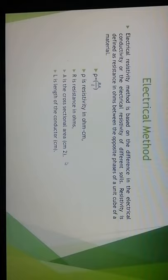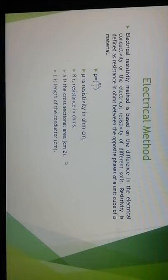The electrical resistivity method is based on the difference in the electrical conductivity or electrical resistivity of different soils and rocks. Resistivity is defined as the resistance in ohms between the opposite faces of a unit cube of material. The equation is: P is the resistivity in ohm-centimeters, R is the resistance in ohms, A is the cross-sectional area in square centimeters, and L is the length of the conductor in centimeters.